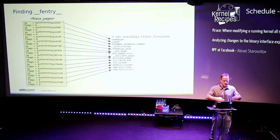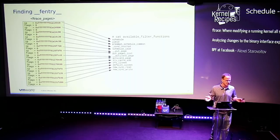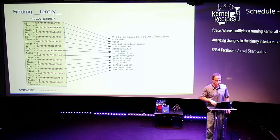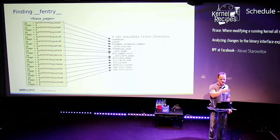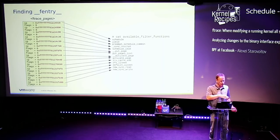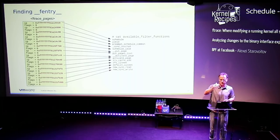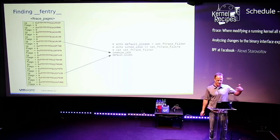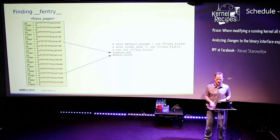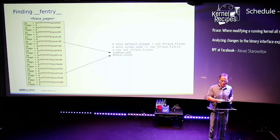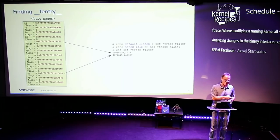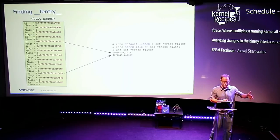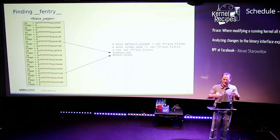When you go into /sys/kernel/tracing and cat 'available_filter_functions', you're wondering where those function names come from — it's just reading that table. The order is sorted by address, not by name. So if you cat 'set_ftrace_filter' and add functions, when you read it back they appear in a different order — because it just sets flags in the table and then reads back which flags are set. The order is always dependent on the ftrace pages.